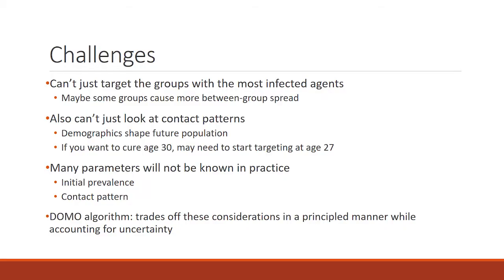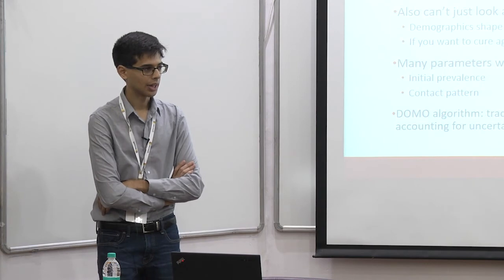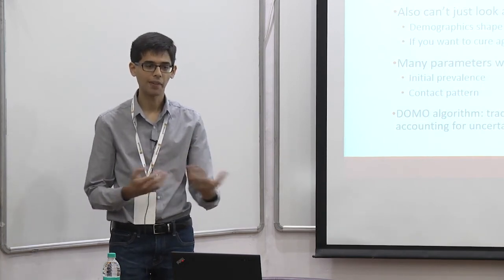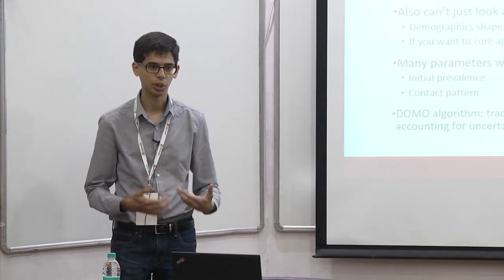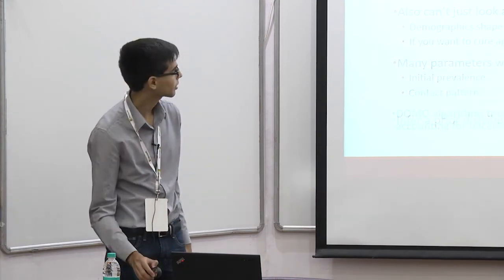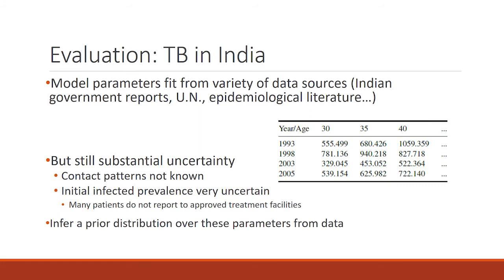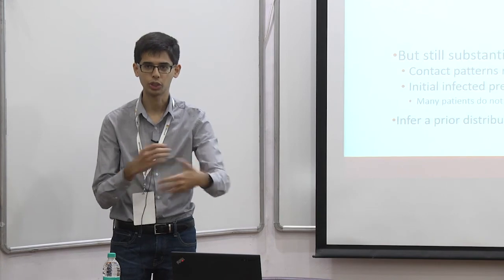The Domo algorithm constructs an optimization problem modeling these trade-offs, with a principled approach to deciding on optimal treatment allocation that accounts for demographic and epidemiological factors and the incompleteness of data. It solves a stochastic problem under uncertainty, working with distributions over the unknown parameters in the problem.